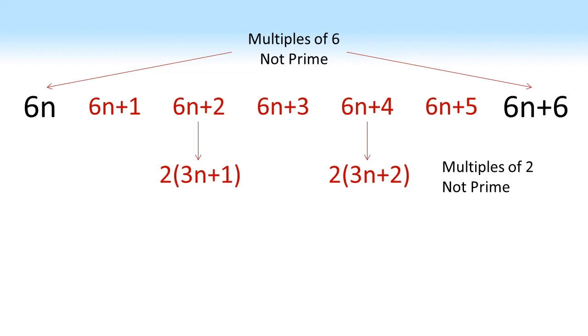Looking at the one in the middle, the 6n plus 3, we can factorise that into 3 lots of 2n plus 1. So similarly, this one must be a multiple of 3, hence this one can never be prime.